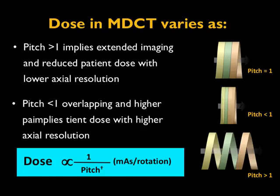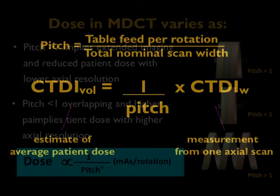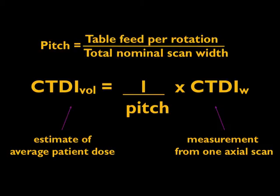A pitch greater than 1 means the helix is extended, leaving some anatomical gaps, which reduces radiation dose but can also lower resolution. A pitch less than 1 means overlapping anatomy, which translates to higher dose. This is wrapped into the CT dose measurement in what is called CTDI vol — or CTDI wall — which is basically CTDI weighted divided by the pitch. So if pitch is less than 1, CTDI vol will be higher; if pitch is greater than 1, the CTDI vol will be lower.